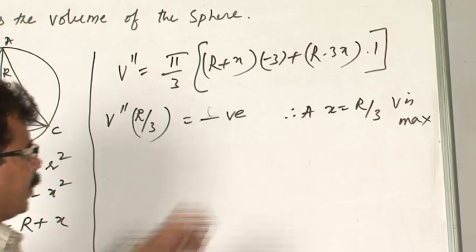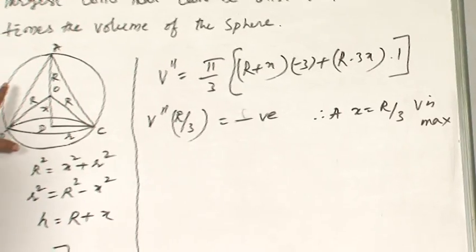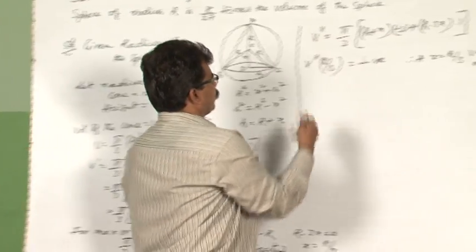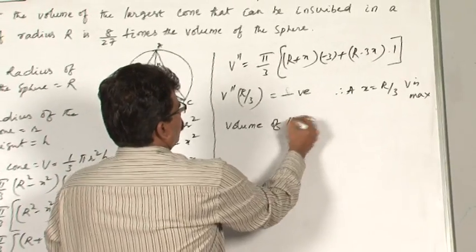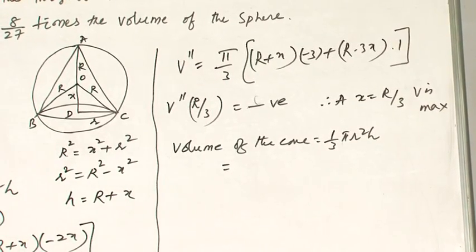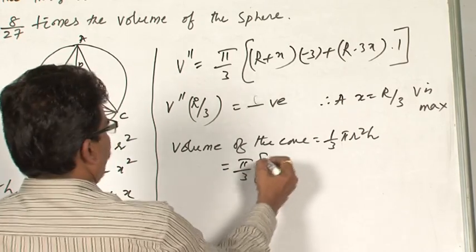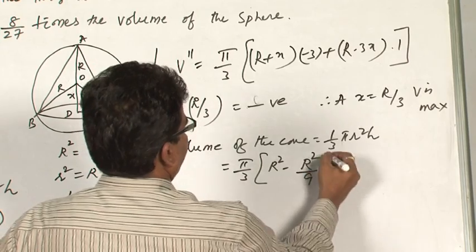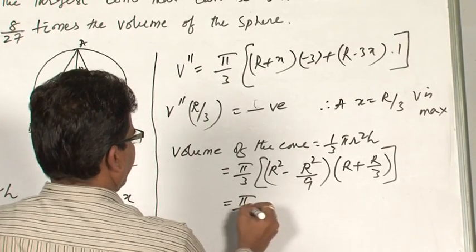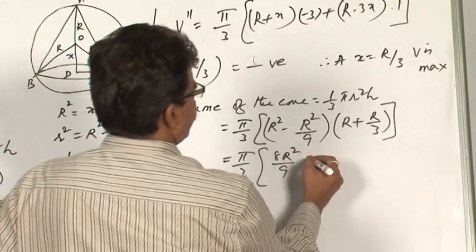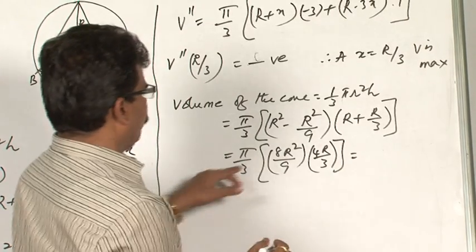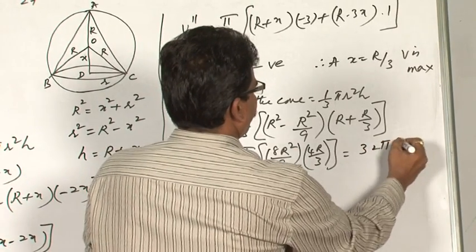So if x equals capital R by 3, let us find separately the volume of the cone and the volume of the sphere — sometimes the question asks to find the volume of the largest cone inscribed in a sphere. Volume of the cone equals pi by 3 times (R squared minus x squared) times (R plus x). Substituting x equals R by 3: R squared minus R squared by 9 gives 8R squared by 9, and R plus R by 3 gives 4R by 3. Multiplying and simplifying gives the maximum volume as 32 pi R cubed divided by 81.